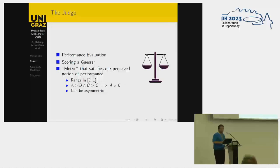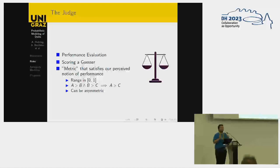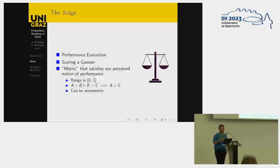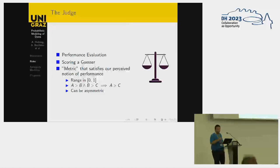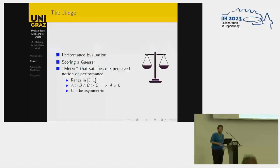The third role is the judge. The judge does performance evaluation — they are the ones who have to tell us who's right and who's wrong, and how much. What they fundamentally are is a metric that satisfies our perceived notion of performance. It's typically in a range of 0 and 1, and there must always be the transitive property: if A is better than B and B is better than C, then A is definitely better than C. It can be asymmetrical, although that's not a tradition, and for good reason.